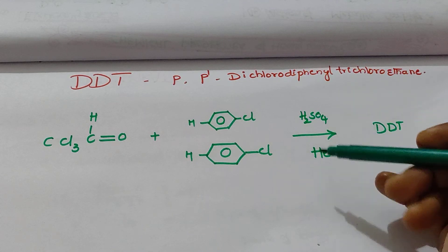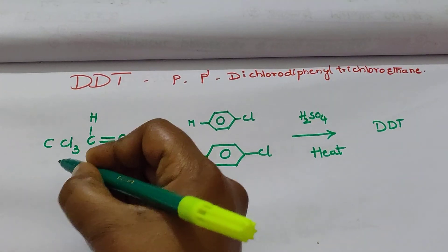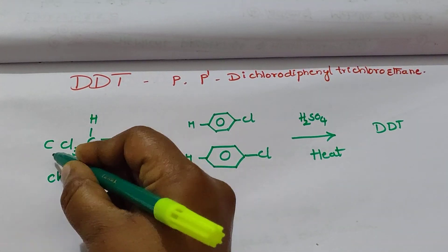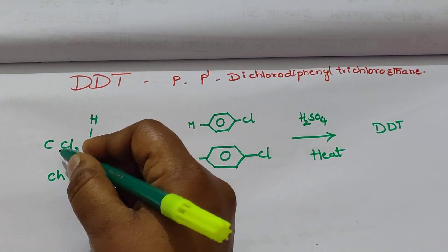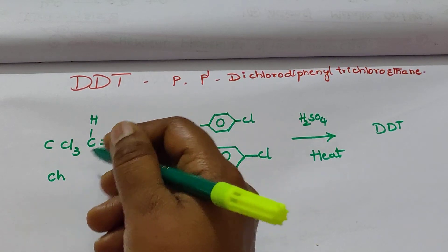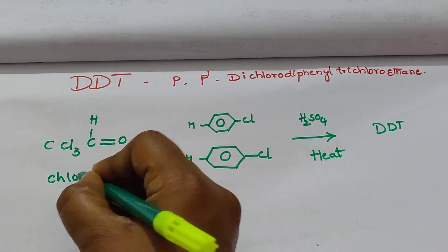How do you get DDT? From chloral, that means CCl3-CHO. The name of CCl3-CHO is chloral.